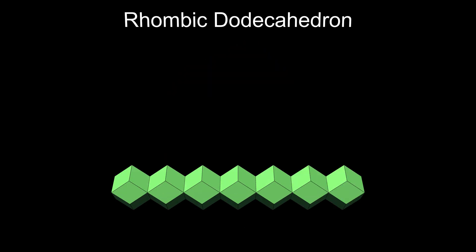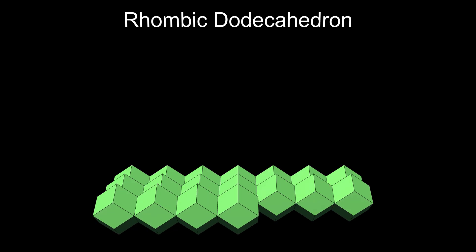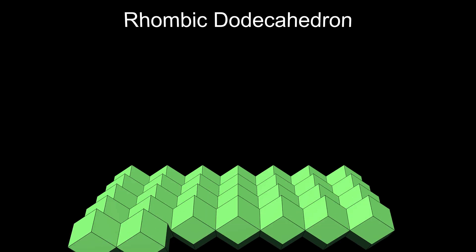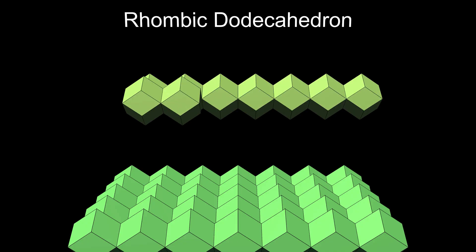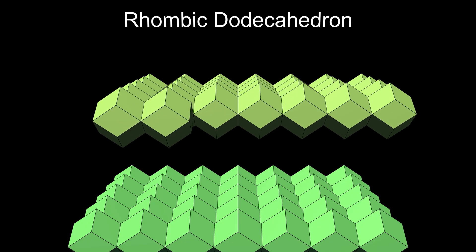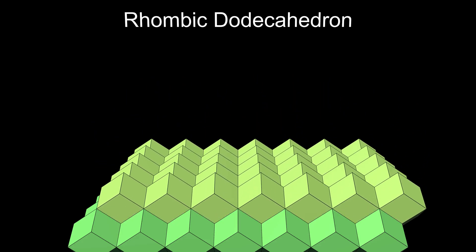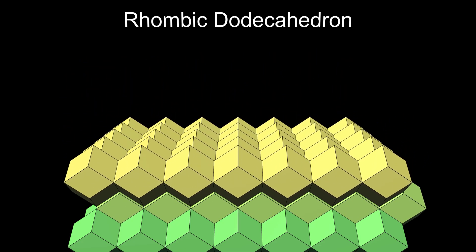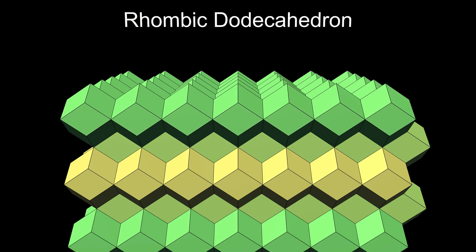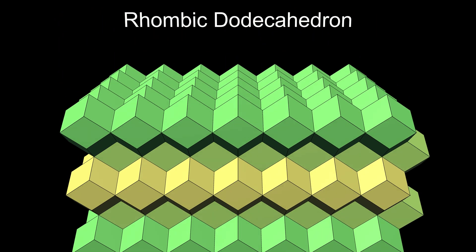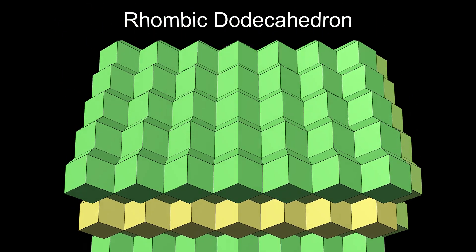As we saw earlier, the rhombic dodecahedron has a square profile when viewed from particular directions. This means that they can be fitted together in a square grid with no gaps, like this. We can add another layer on top, again without leaving gaps, and so on indefinitely. So the rhombic dodecahedron tiles space perfectly — it's the only Catalan solid that has this property.